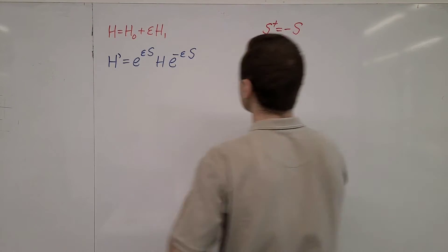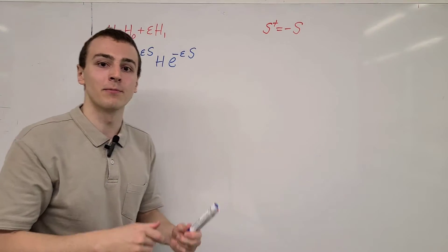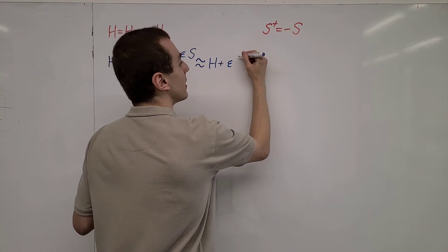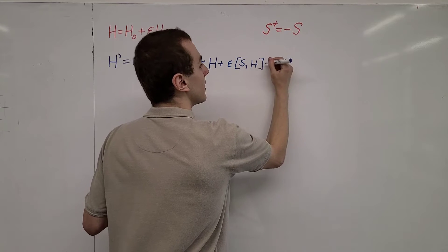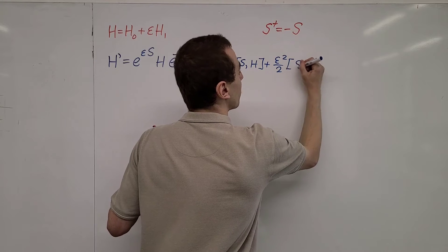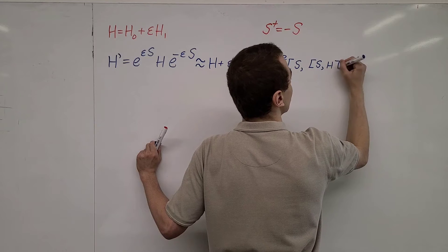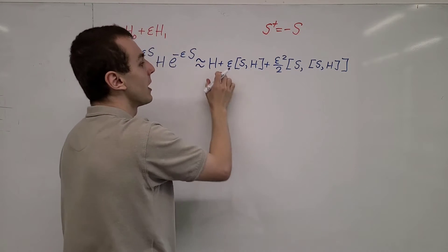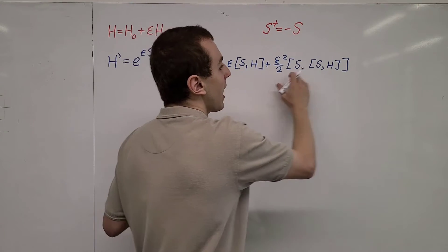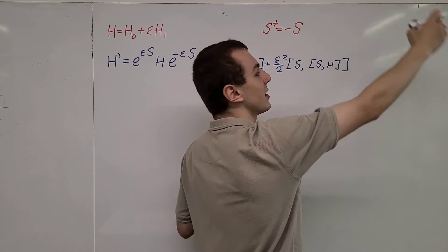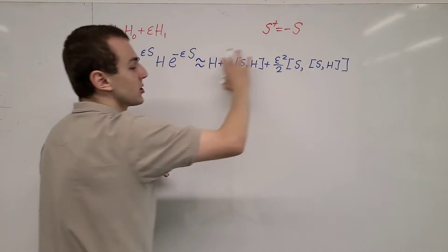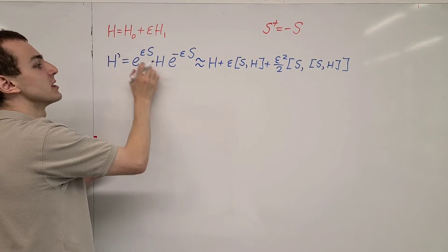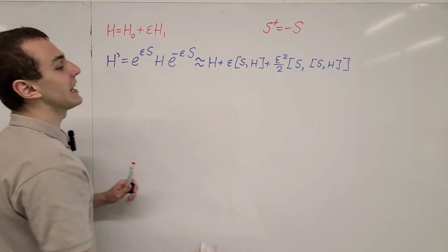Now I want to write this out using a special case of the Baker-Campbell-Hausdorff formula, which we derived in the previous video. This is approximately equal to H plus epsilon times the commutator of S with H, plus epsilon squared over 2 times the commutator of S with the commutator of S with H — a nested commutator. This is up to second order, with a zeroth order term, a first order term, and a second order term. Higher terms would have even more nested commutators, and this form is derived using Taylor expansions of the exponentials of the anti-Hermitian operator.